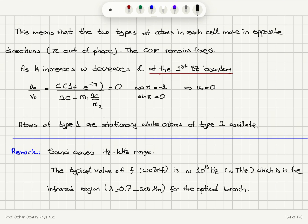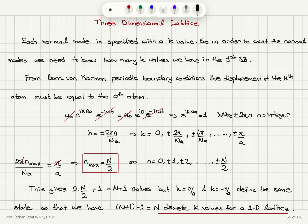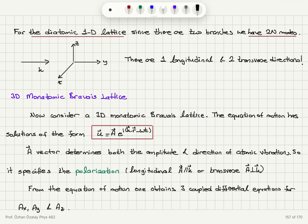For the optical branch, as k goes to zero, the two types of atoms move out of phase so the center of mass remains fixed. At the first Brillouin zone boundary, type 2 atoms move and type 1 atoms don't. Typical frequency ranges: hertz to kilohertz for sound waves and terahertz for optical modes. For a transverse wave, if atoms move in the same direction as propagation, it is a transverse acoustical mode; if out of phase, it is a transverse optical mode. In three dimensions, we count N discrete k values for a one-dimensional lattice.